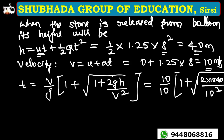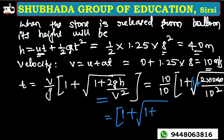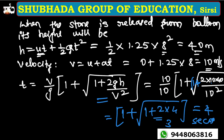Simplifying: 1 plus square root of (1 plus 800 divided by 100) equals 1 plus square root of 9 equals 1 plus 3 equals 4. So t equals 1 into 4 equals 4 seconds. The stone reaches the ground in 4 seconds, which is the right answer.